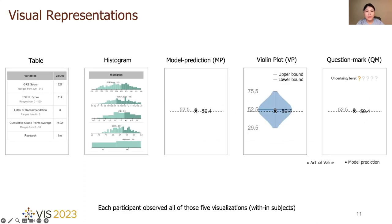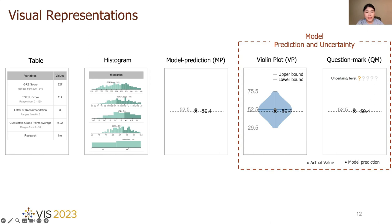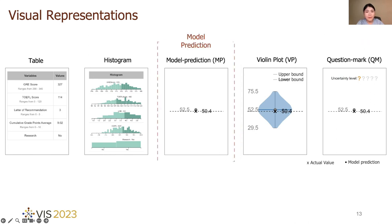We included five different visualizations in our study, and each participant observed all of those five visualizations. Among them, table and histogram were used to benchmark the effects of other visualizations with model prediction, uncertainty information, or both. For presenting model prediction and its uncertainty information, we used a violin plot to convey model uncertainty in a distributional way, and a question mark to convey the model uncertainty in an ordinal way. And we examined these two uncertainty visualizations compared to a baseline case where only the model prediction was presented.